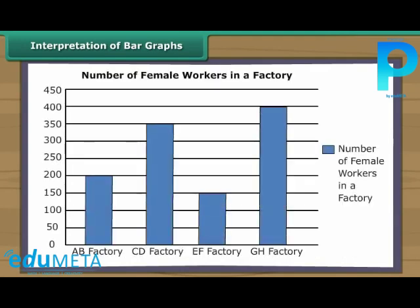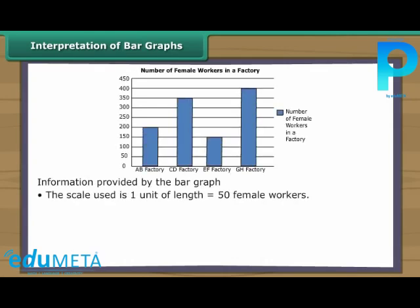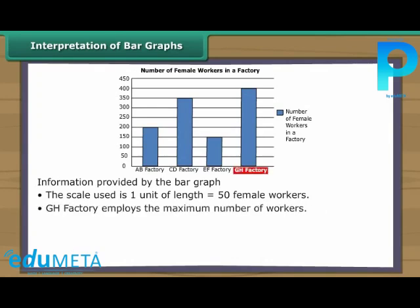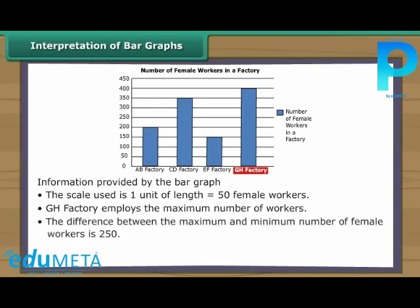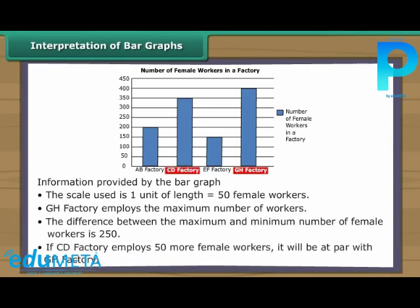Let us interpret one more bar graph. This is a vertical bar graph showing details of female workers in a factory. The scale used is 1 unit of length equal to 50 female workers. GH factory employs the maximum number of workers. The difference between the maximum and minimum number of female workers is 250. If CD factory employs 50 more female workers, it will be at par with GH factory.